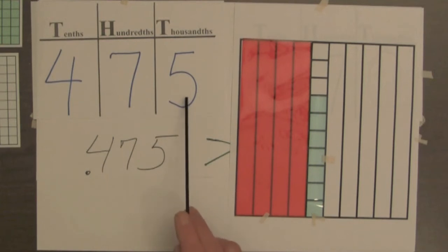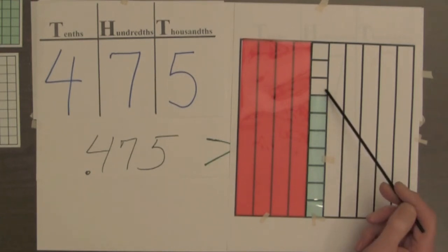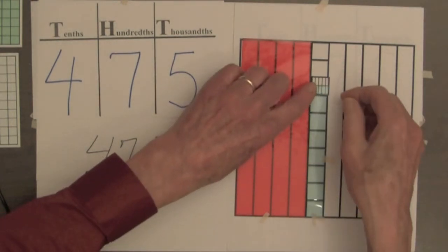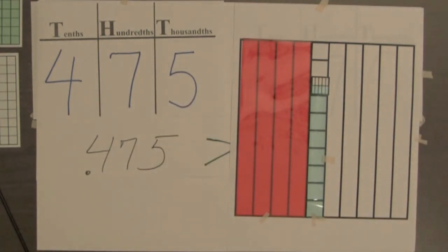But the five in the thousandths place tells us there is more. So we divide the next hundredths square into ten equal parts and shade five of them.